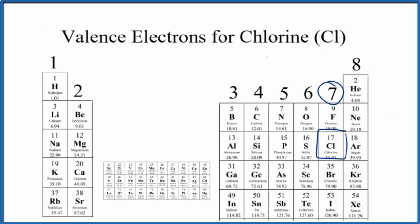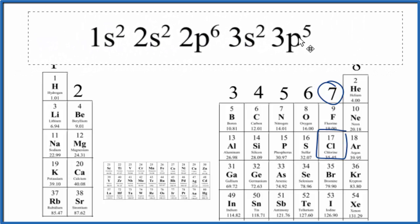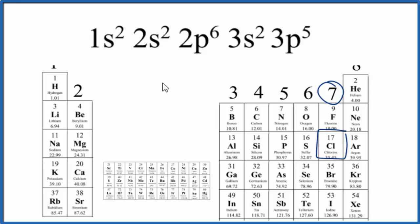We could also look at the electron configuration for chlorine. Here's the electron configuration for chlorine, and we find the highest energy level, that's the third energy level. That third energy level has two plus five, so seven valence electrons for chlorine, just like we saw on the periodic table.